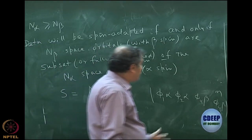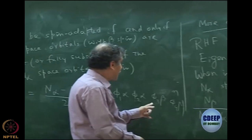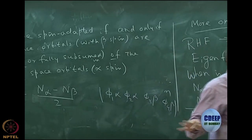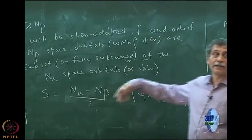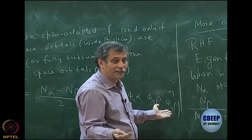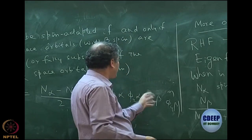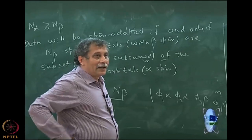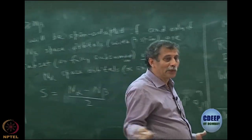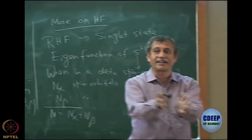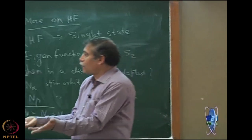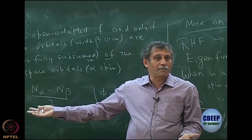For spin adaptation with 2 alpha and 2 beta orbitals, it is essential that the space parts are identical — like a beryllium system: 1s-alpha, 1s-beta, 2s-alpha, 2s-beta — clearly spin-adapted. RHF by construction is spin-adapted because we have ensured the alpha spin orbitals are identical to the beta spin orbitals in space part. So RHF is by construction spin-adapted and is a singlet state with S equals 0.